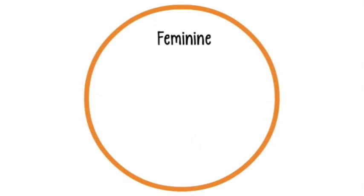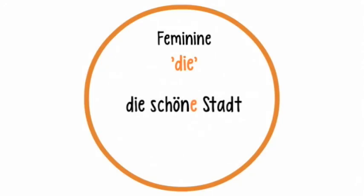Let's have a look at the feminine form Die. Here we have the example of Die schöne Stadt, which means 'the beautiful city.' Die Stadt means 'the city.' Here you can see that in the case of Die, the adjective schön changes to schöne: Die schöne Stadt.